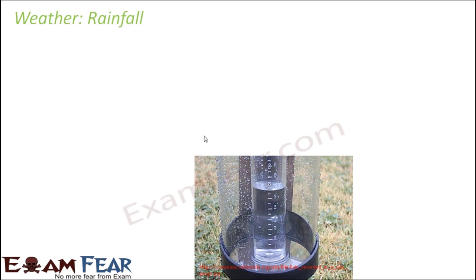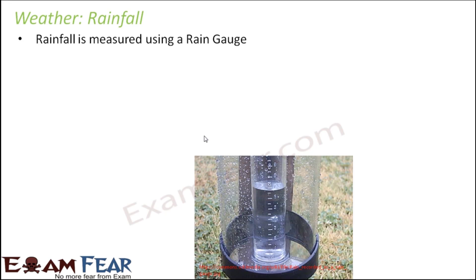Let us now talk about another element of weather which is a very important element, and that is rainfall. We often talk of rainy days — our schools get shut down if it is raining very heavily. So what is this rainfall and how do we measure how much rainfall is taking place at a particular place? For measuring rainfall, we have something called a rain gauge, and this rain gauge helps to measure the amount of rainfall at a particular place.